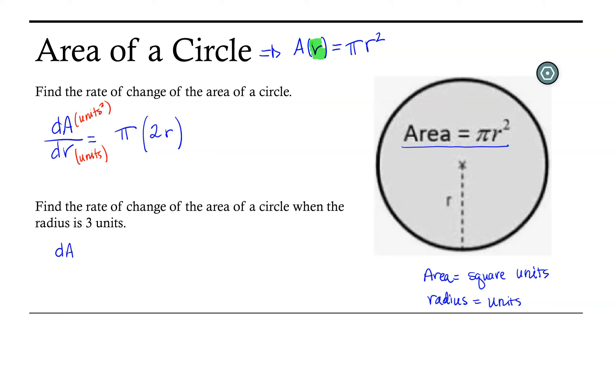So dA/dr when r is equal to 3 units, which could also be written as dA/dr at 3, is equal to π times 2 times 3, or 6π.